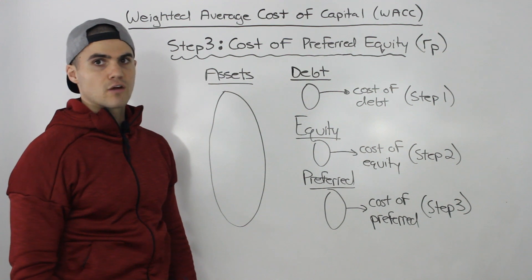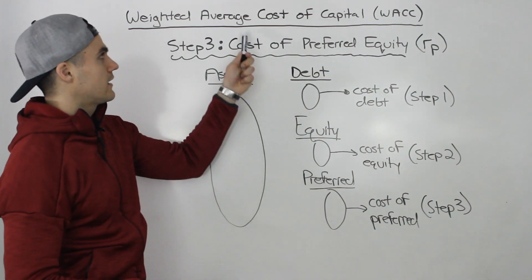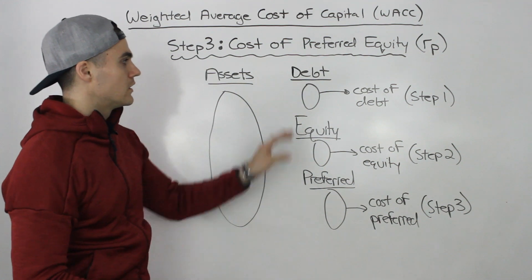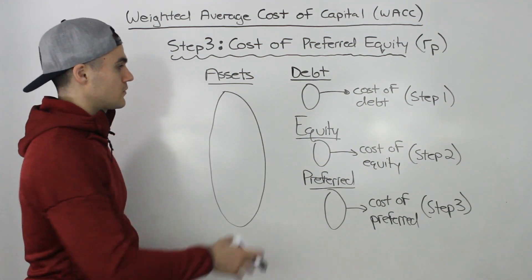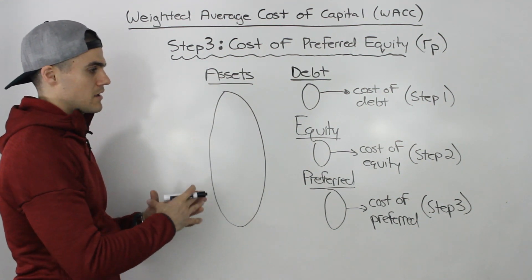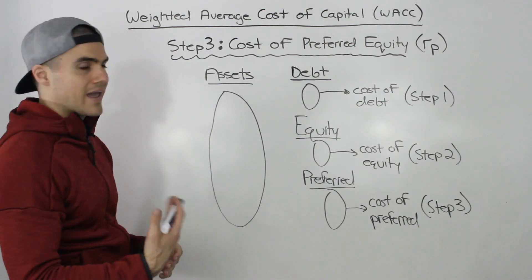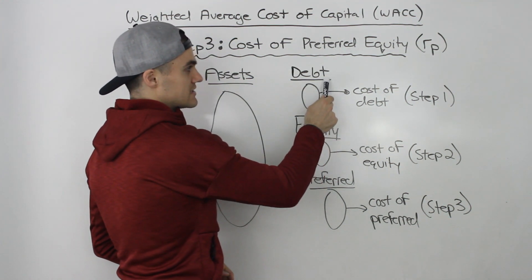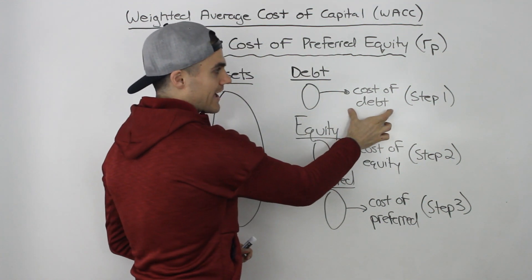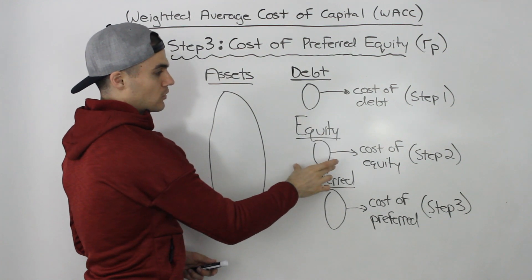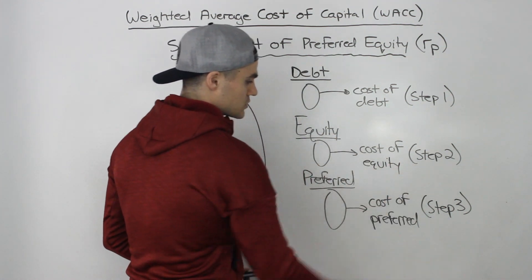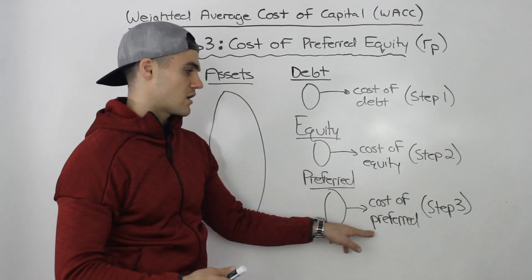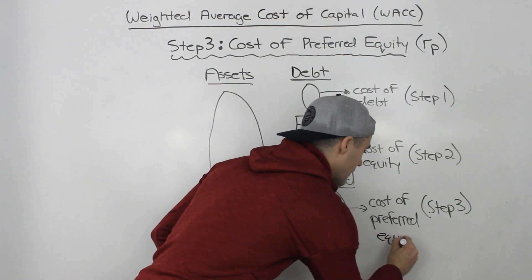Let's do a summary of the steps covered so far in finding the weighted average cost of capital. There are three sources of capital: debt, equity, and preferred. We pay a return to each — cost of debt was step one, cost of equity was step two, and cost of preferred equity was step three in this video.